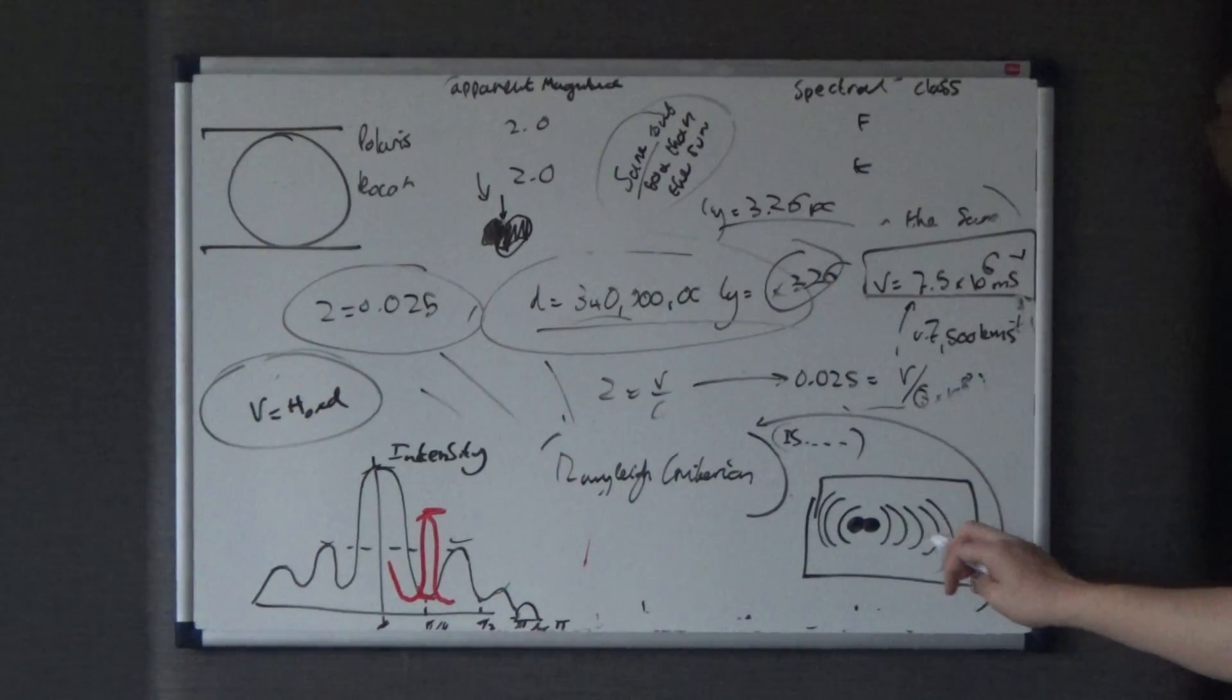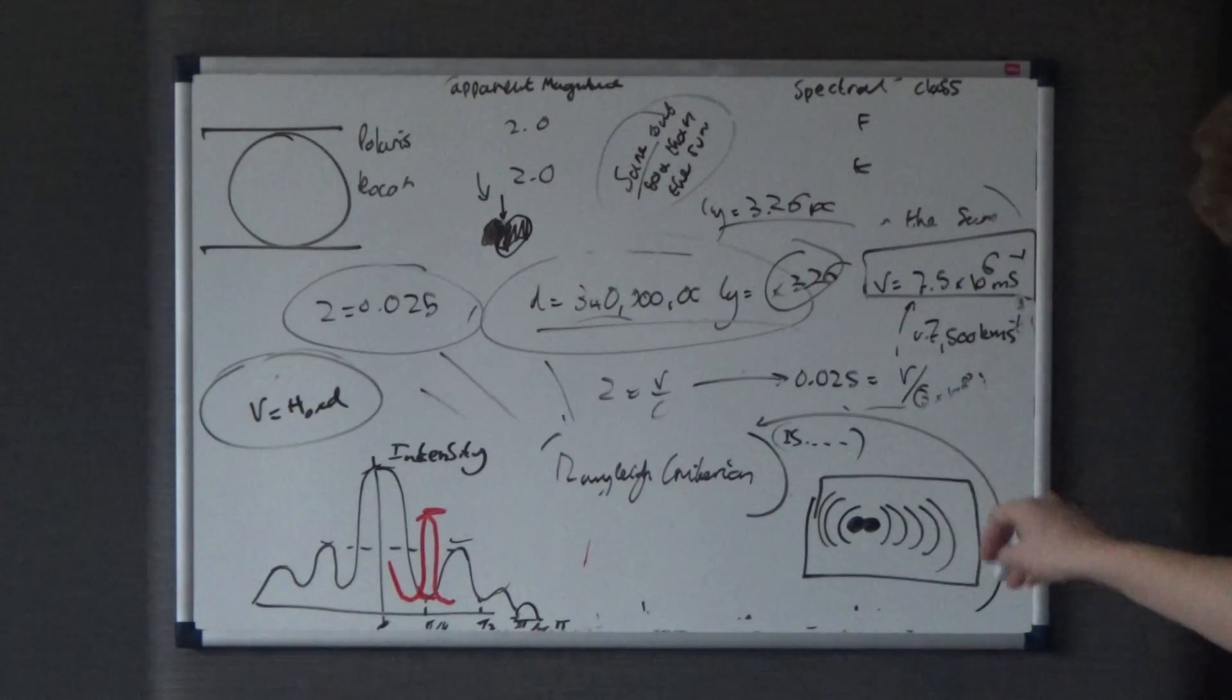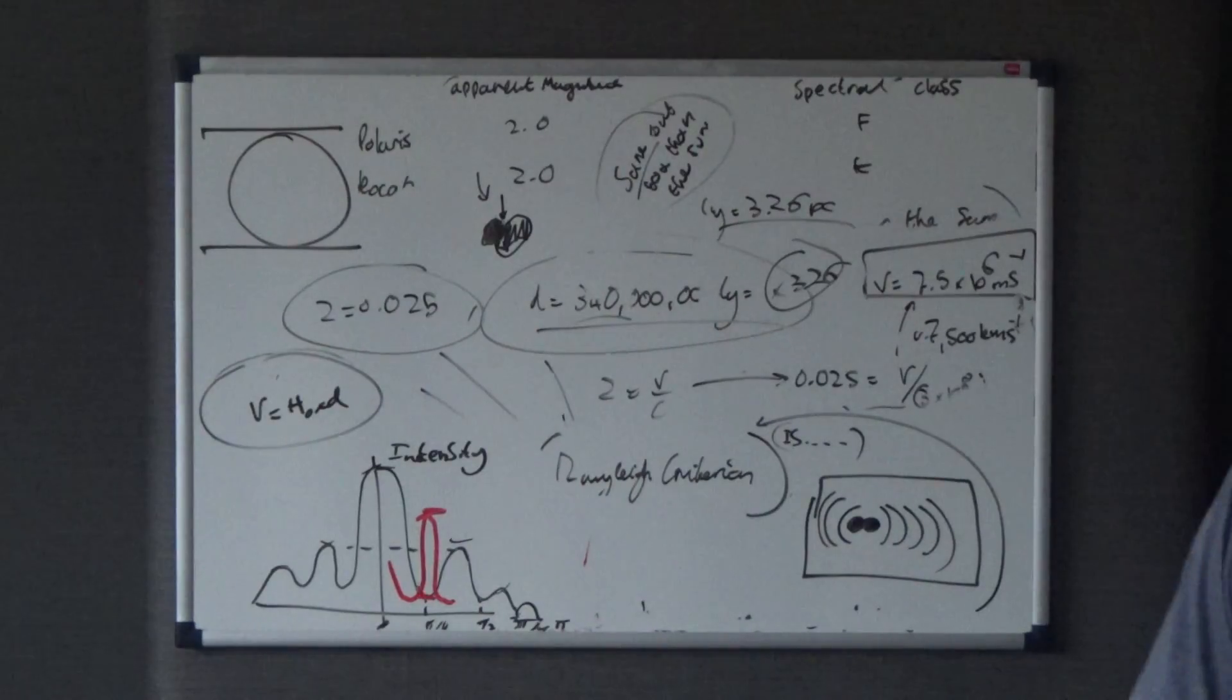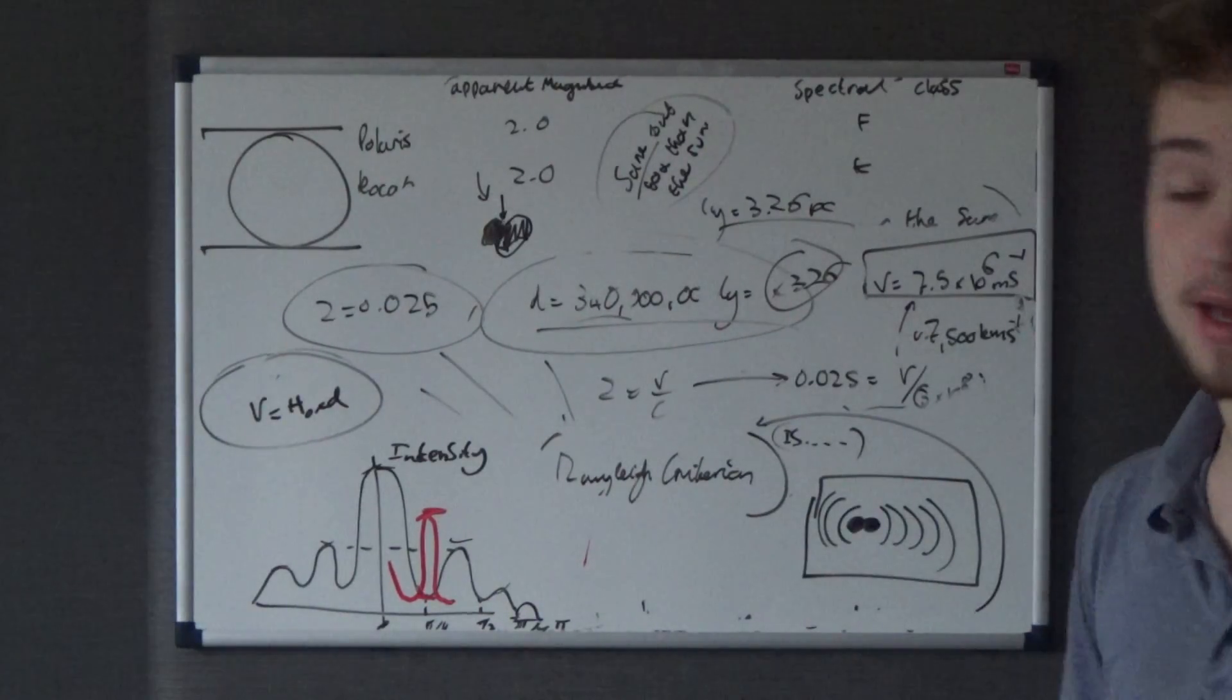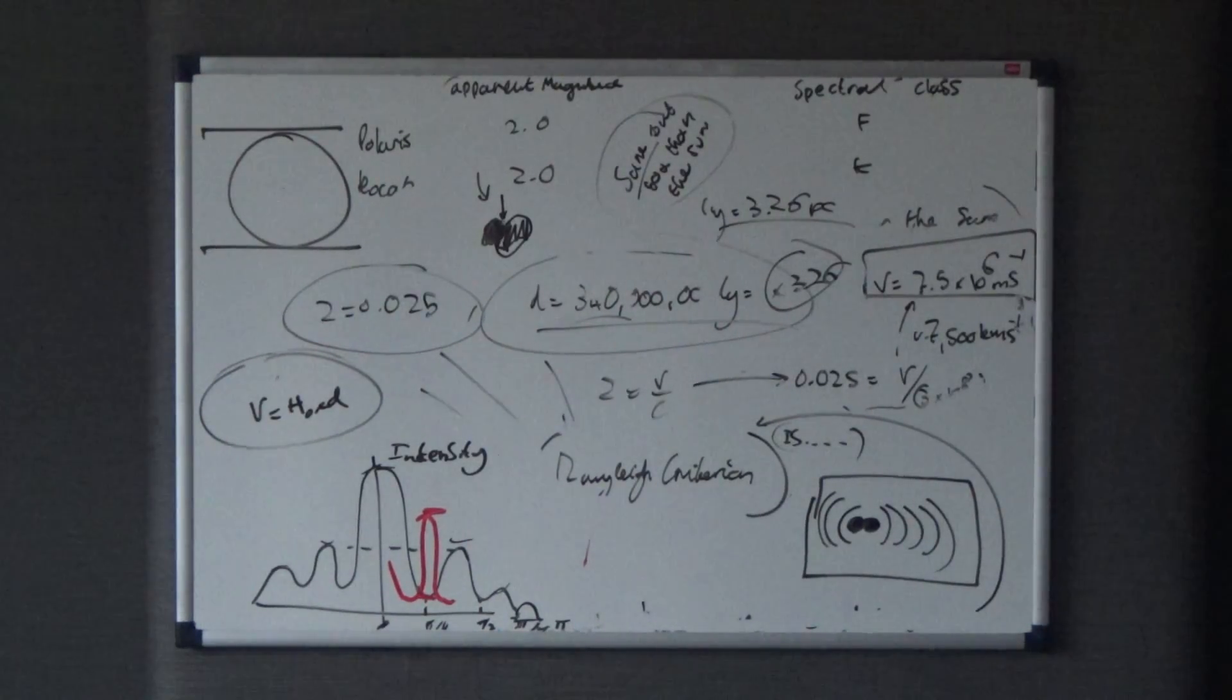Because well, this is a diffraction pattern, and each bump of these represents, each kind of line represents a bump, a maximum, and obviously, the two in the middle there represent the central maximum.